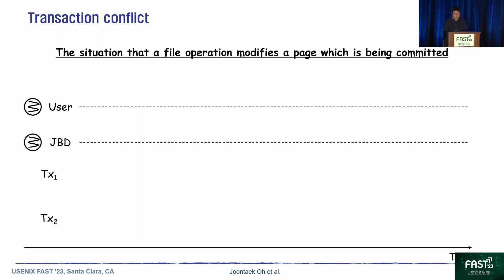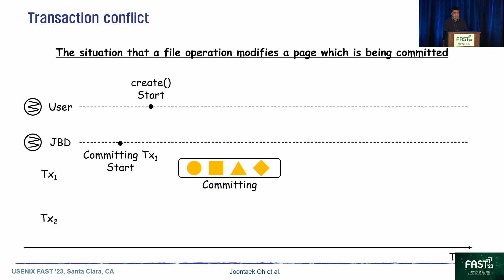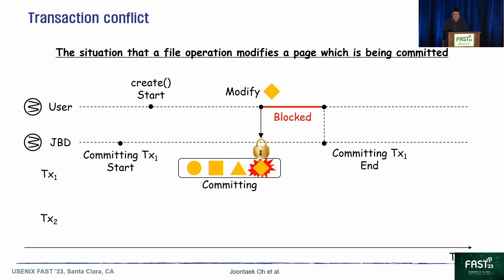Let me explain transaction conflict first. Transaction conflict is a situation where a file operation modifies a page which is being committed. Here, the JBD thread started to commit TS1 and a user thread called createCSNCore. TS1 has four pages and is being committed. The createCSNCore is going to modify the diamond page, which is being committed in TS1, so a transaction conflict occurs. At this point, EXT4 blocks createCSNCore until the commit is finished. After the commit, createCSNCore is unblocked and the diamond page is inserted into the new running transaction TS2. Because of transaction conflict, metadata operations can be blocked and file system performance can be degraded.